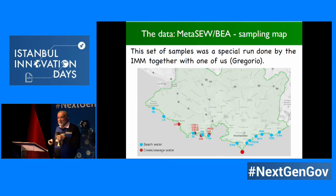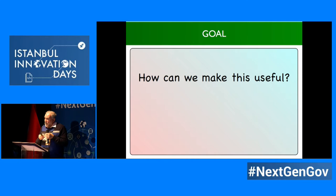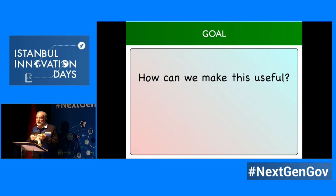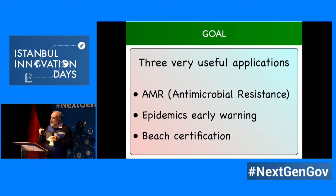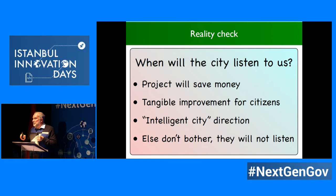Here comes one of the important aspects very pertinent to this audience: how can we make this useful for the city? From the research point of view, we have millions of interesting problems we could solve, but those are not the ones that will interest the city. So we have concentrated on three applications: antimicrobial resistance, an epidemic early warning system, and beach certification.